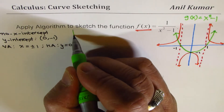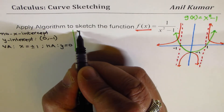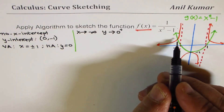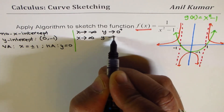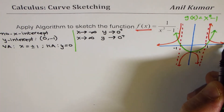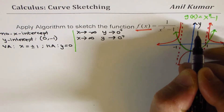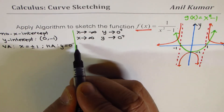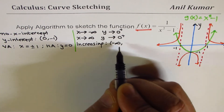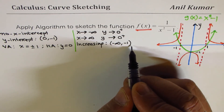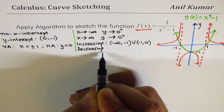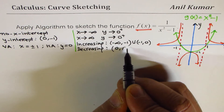From here we'll also write down the end behavior. When x approaches negative infinity, y approaches 0 from the positive side. And when x approaches positive infinity, y approaches 0 from the positive side only. We can also identify the increasing and decreasing intervals: increasing from negative infinity to minus 1, and then from minus 1 to 0. Decreasing from 0 to plus 1, and then from 1 to infinity.